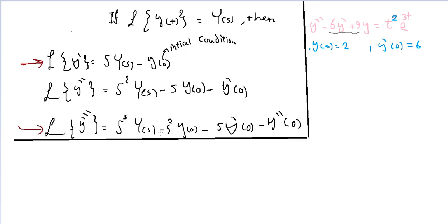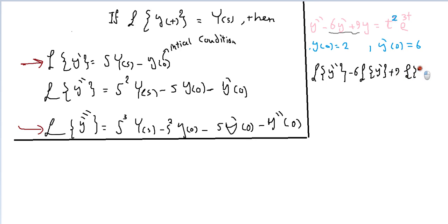Hello and welcome. We have another question here, and we want to take the Laplace transform of both sides of this function. We're going to get Y(s), so we'll take the Laplace transform of both sides: the Laplace transform of y double dash, minus a constant times y dash, plus a constant times y, equals the Laplace transform of t² times e to the power of 3t.